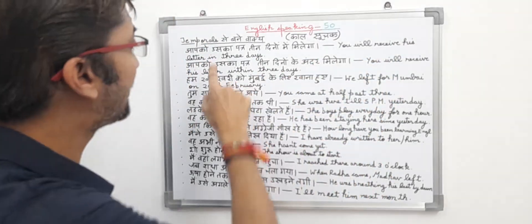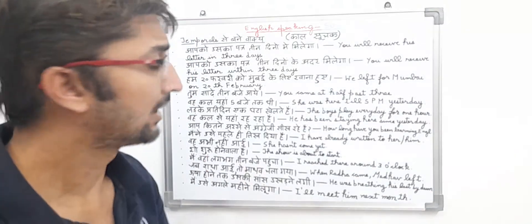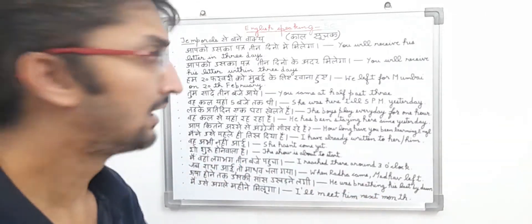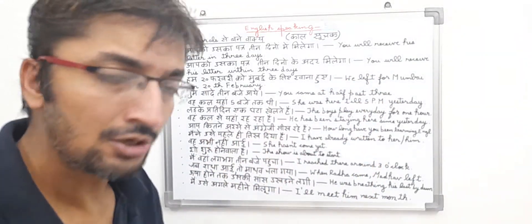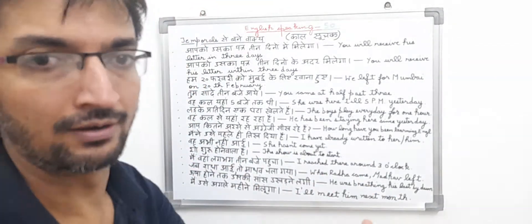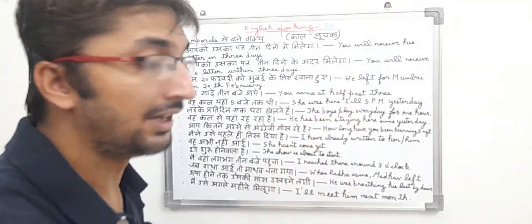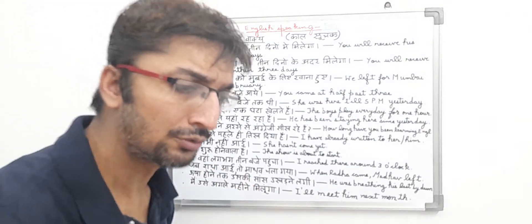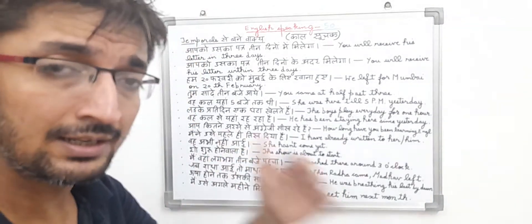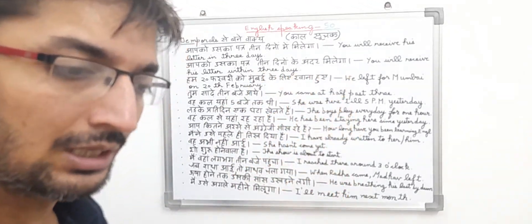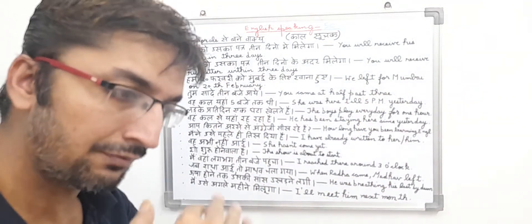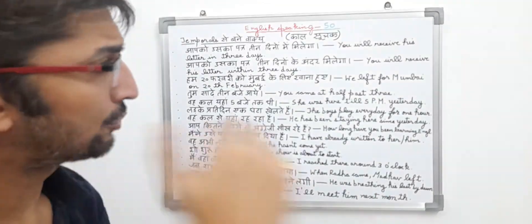In English, you will receive his letter in three days. So basically, in this sentence they are trying to say you will receive his letter in three days. They are telling the time period or duration — within which the letter is going to be delivered. So in English it means: you will receive this letter within three days. This is a temporal type sentence and it is also a future tense.